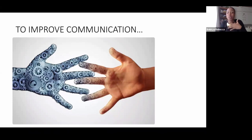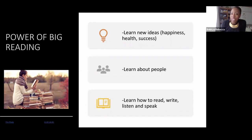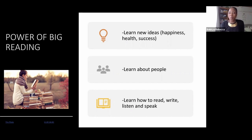We need to connect with the words, with the songs, with the books, with the stories. We need to connect with them. So in Total English A and B, we connect with these stories through reading. And through reading, we learn new ideas about happiness, about health, about success. We learn about people. We learn how to read, write, listen, and speak. That is the power of big reading. So you're probably now asking, what does big reading mean?